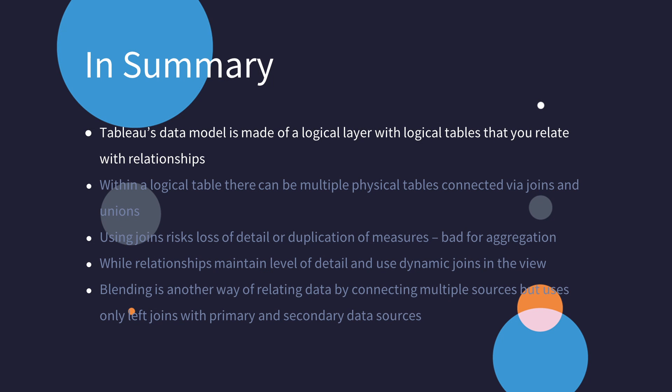Now we've seen joins, relationships and blending in Tableau, and how they operate between the logical and physical layers. Tableau's data model is made of a logical layer and a physical layer. The logical layer has logical tables, and logical tables can be related together using relationship connections. Logical tables can also house within them multiple physical tables, connected together by joins and also unions. Using joins risks loss of detail or duplication of measures, which can be bad for aggregation. So joins are good if you want just one logical table or if you know exactly the level of detail you need. While relationships maintain all detail in all tables and use dynamic joins in the view, it is important to keep track of your related logical tables so as to avoid a messy, overcrowded data model.